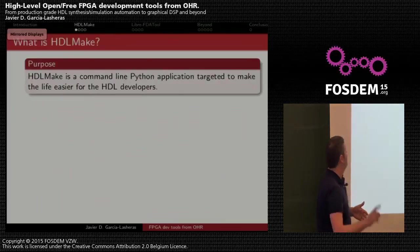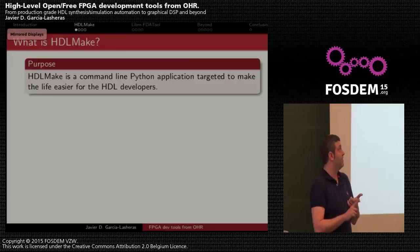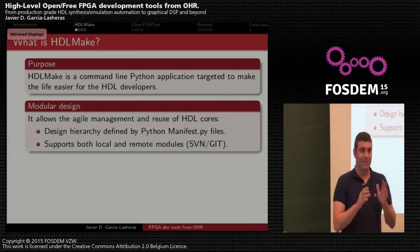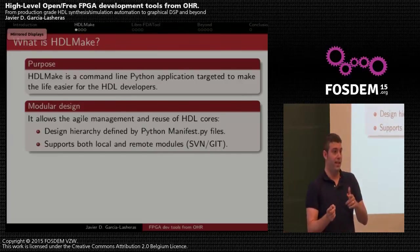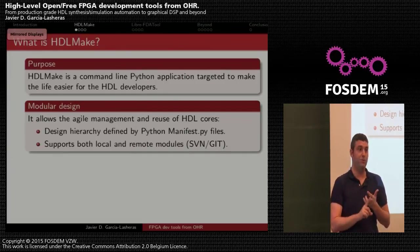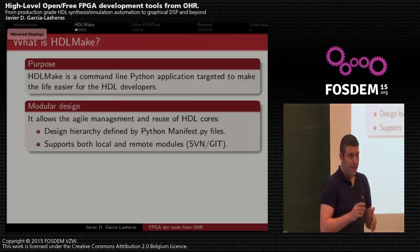Now we can go to the first tool — maybe the most important one — HDL Make. The main purpose of HDL Make is to be a command-line Python application targeted to make life easier for HDL developers. It is very focused on having a very modular design that allows agile management and reuse of HDL cores, so you can define the whole design hierarchy using very simple Python manifest.py files.